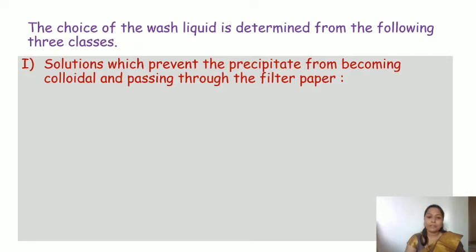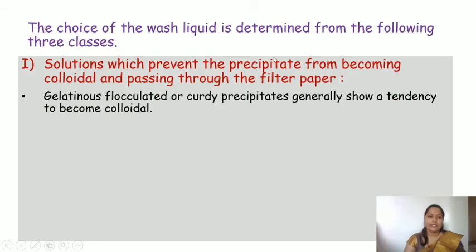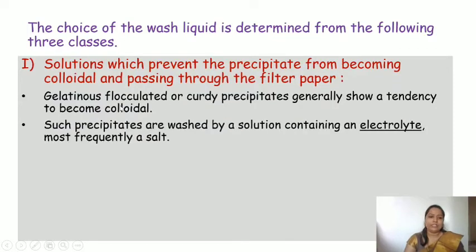The first class: solutions which prevent the precipitate from becoming colloidal and passing through the filter paper. Precipitates which are colloidal in nature — gelatinous, flocculated, or curdy precipitates — generally show a tendency to become colloidal. For washing such precipitates, a solution containing an electrolyte, most frequently a salt, is used as a wash liquid.